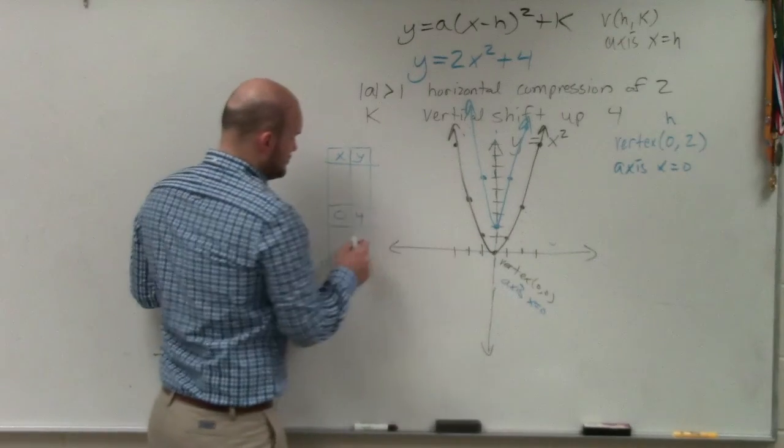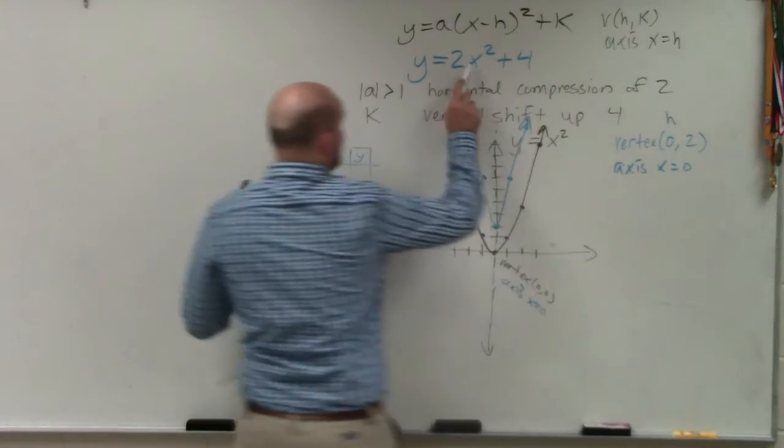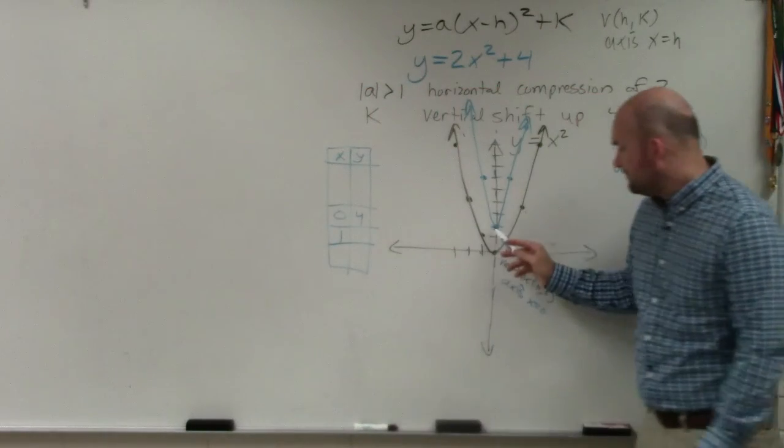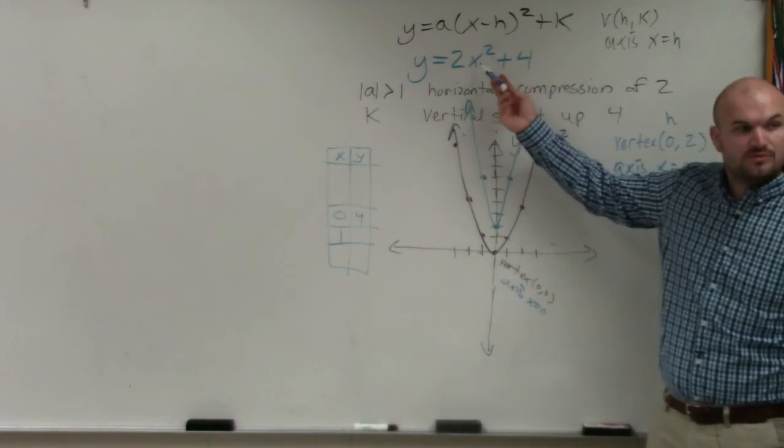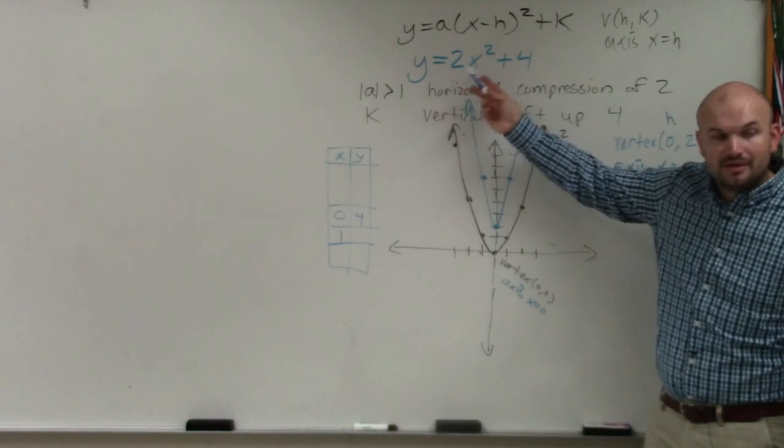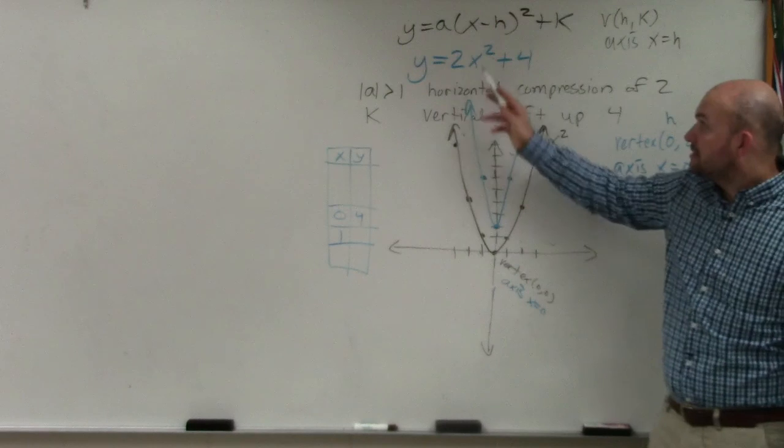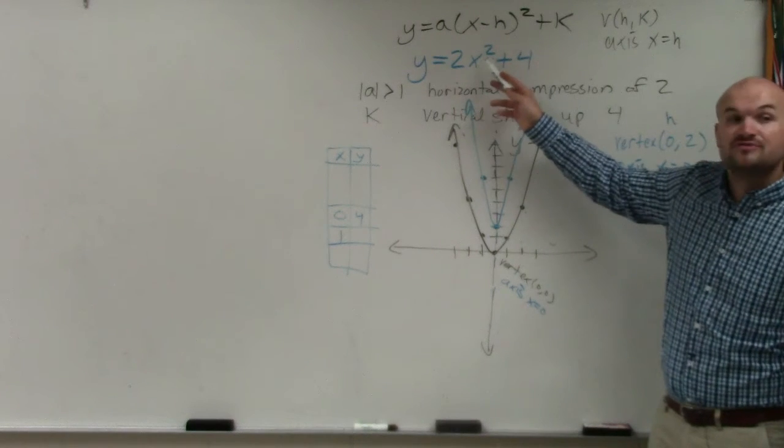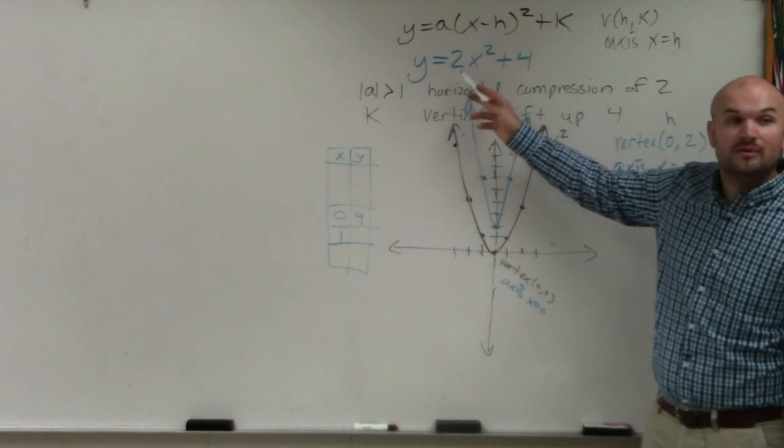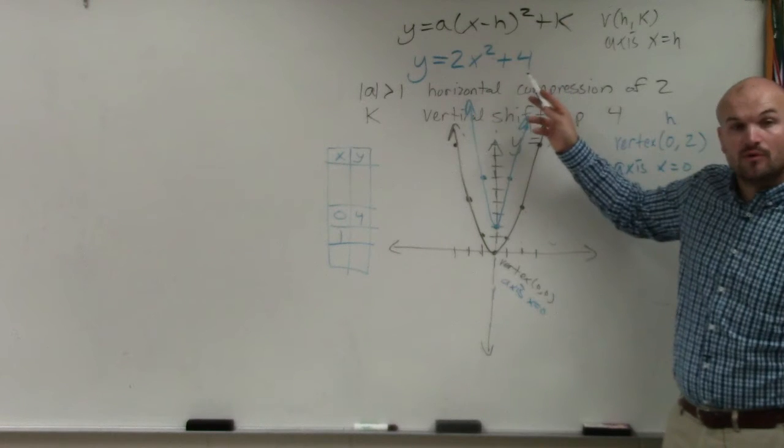So if I chose 1, what I get is: if I choose 1 here, 1 squared is 1 times 2 is 2 plus 4 is 6. So I go over 1, up 6. Let's plug in 2. 2 squared is 4. 4 times 2 is 8. 8 plus 4 is 12.